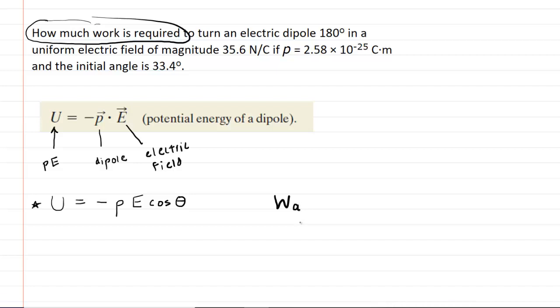The work that is done by that external agent is equal to the final potential energy of the object, in this case the electric dipole, minus the initial potential energy of that same object.